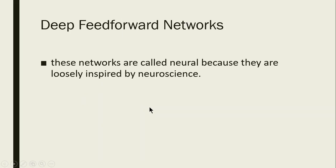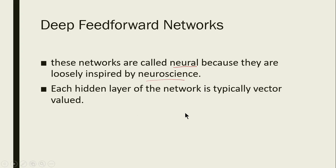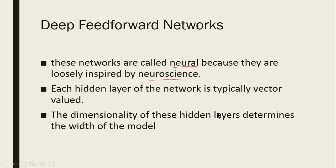These deep feedforward networks are called neural networks because they are loosely inspired by neuroscience — how the neurons in our body work. Each hidden layer of the network is typically vector-valued, not single-valued, and the dimensionality of these hidden layers determines the width of the model.